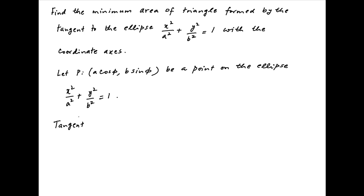Therefore, the equation of the tangent to the ellipse at point P is obtained by replacing x squared with x times a cos phi and y squared with b sin phi times y. So the equation of tangent is: